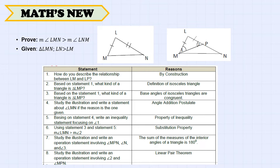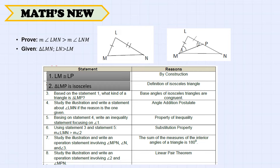How do we describe the relationship between LM and LP? LM is congruent to LP. Based on statement 1, triangle LMP is an isosceles triangle. Since it is an isosceles triangle, angle 1 is congruent to angle 2, because the base angles of isosceles triangles are congruent.